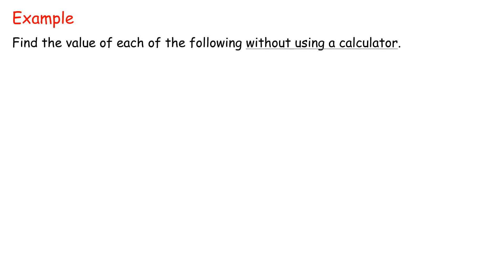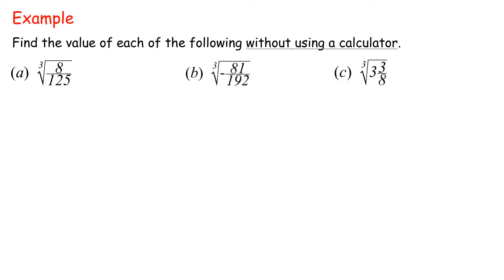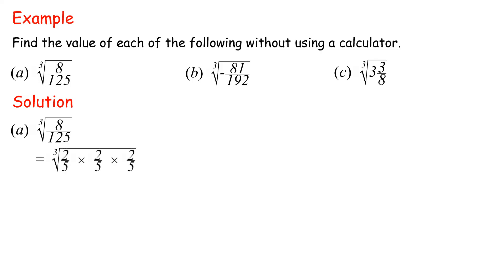Example: Find the value of each of the following without using a calculator. Solution A: Cube root of 8 over 125 equals cube root of 2 fifths times 2 fifths times 2 fifths equals cube root of 2 fifths cubed equals 2 fifths.